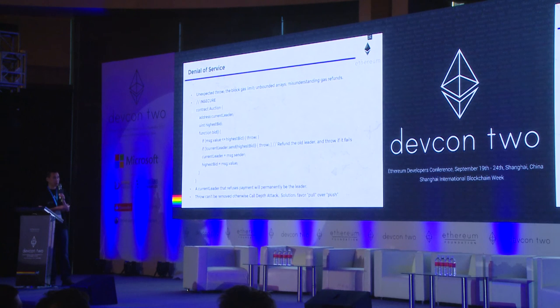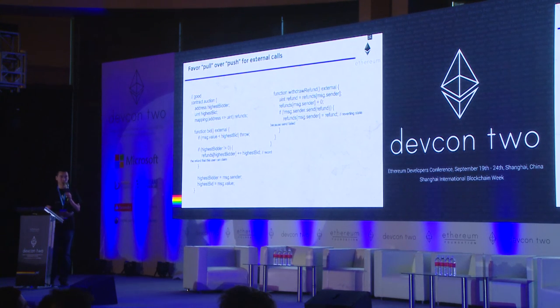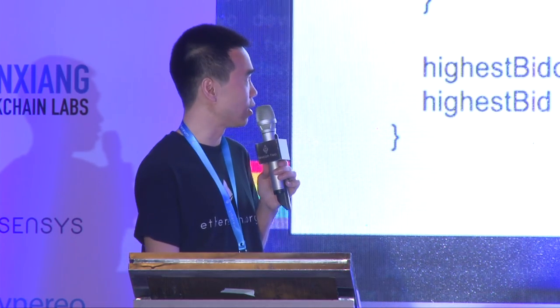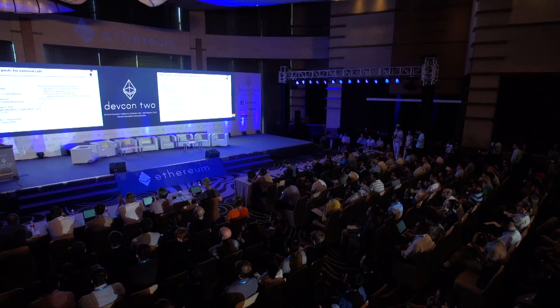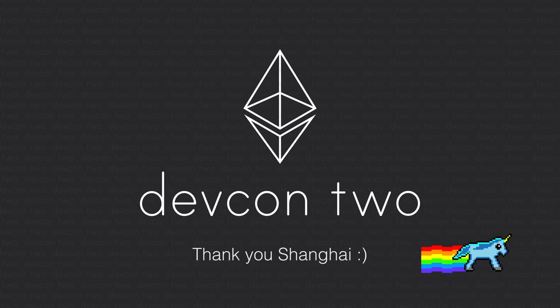The final tip is to change this into a pull-over-push system. The left side shows the auction contract from a couple of slides ago. Instead of doing a send to the recipient, the contract just keeps track of the refunds owed to the highest bidder. The right side shows the pull method, where everything works based off message sender. By doing this, an attacker can basically only attack themselves. So that's it.